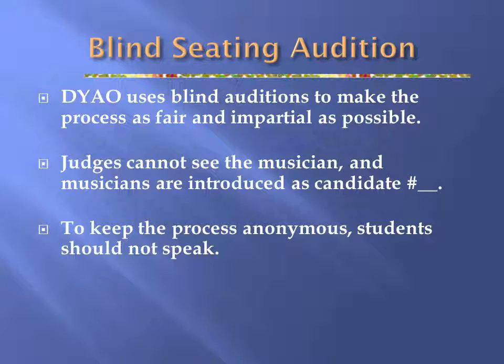To ensure fairness and impartiality throughout the audition process, DYAO uses a screen in auditions. A screen is set up so that the judge won't be able to see the student and the student won't be able to see the judge. The judge is not provided with the student's name, only a number. Students are told not to speak or otherwise give up their identity. To watch a demonstration of a DYAO seating audition, please watch the video at the end of this presentation.